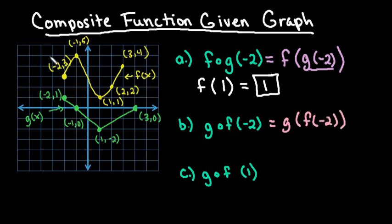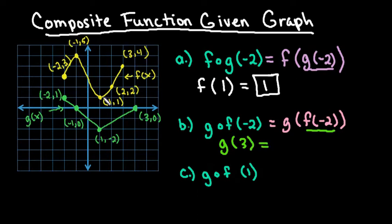This time it's telling us to look at our f equation and find f of negative 2. I go look at my f equation and see that f of negative 2 has an output of 3. So now we're going to go to g of 3 and see what my output is. If I go to g, that's the green graph, and I look at 3, my output is 0. And so that would be my final answer.